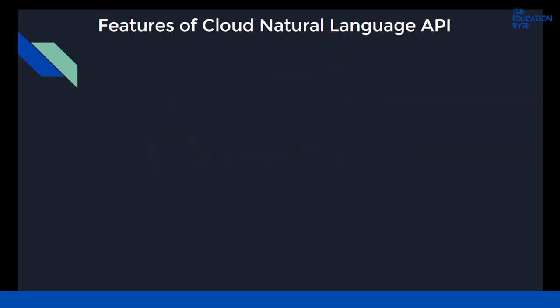The Natural Language API has several methods for performing analysis and annotation on your text, and each level of analysis provides valuable information for language understanding. Sentiment analysis inspects the given text and identifies the prevailing emotional opinion within the text, especially to determine a writer's attitude as positive, negative, or neutral. Sentiment analysis is performed through the analyze sentiment method.